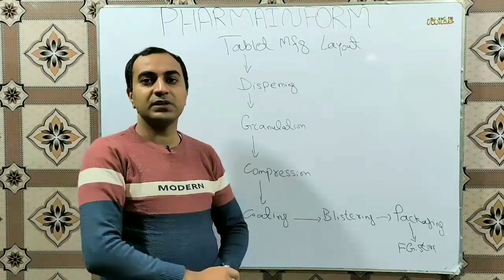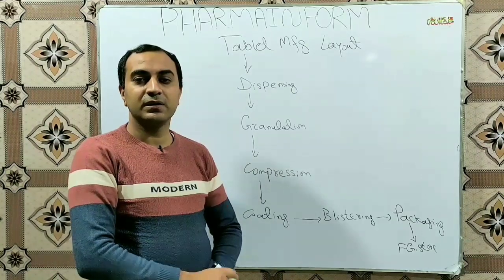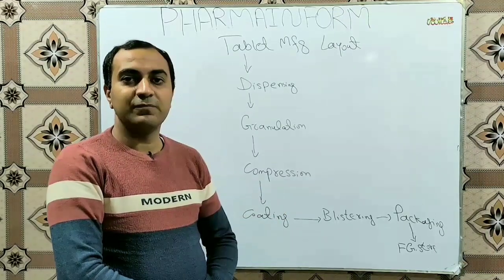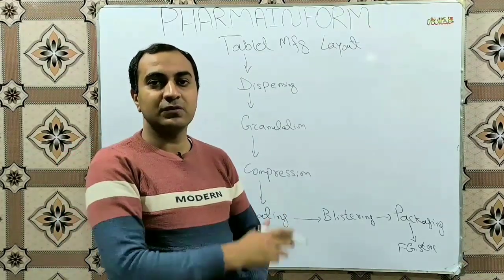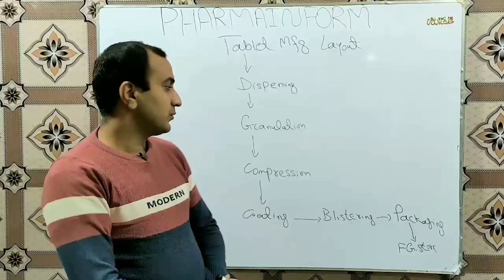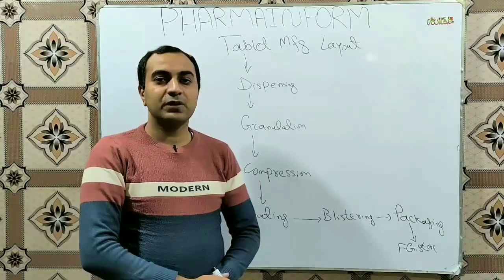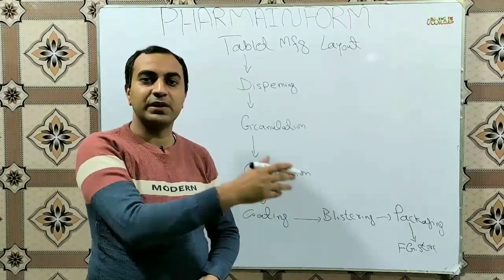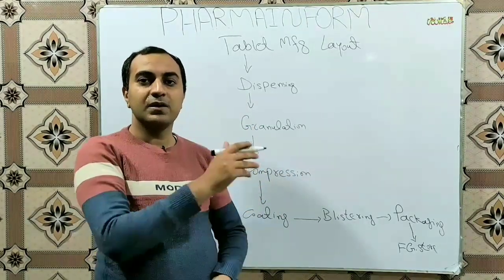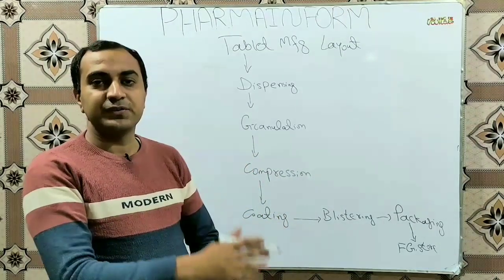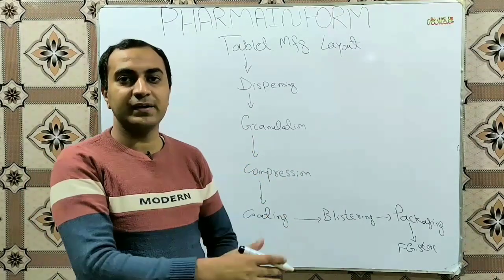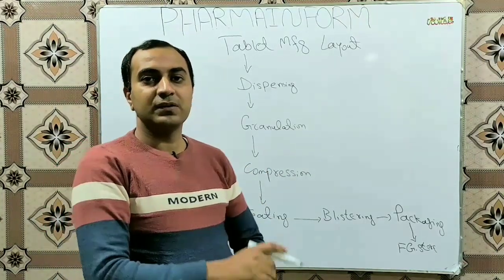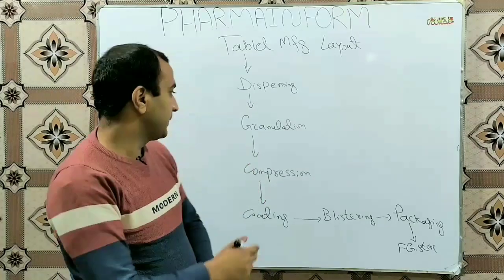In the granulation area, we granulate our product. Depending upon the method of granulation used, it may be wet granulation, dry granulation, or simply a mixing process. Different types of steps are involved, like weighing, sieving, pre-mixing, wetting, wet sieving, drying, dry sieving, and final mixing. You can watch details of all these steps in the link given in the description.